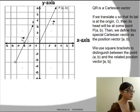Suppose the vector is u. We can translate this vector so that its tail is at the origin (0,0). Its head will be at some point P(a,b). Then we define this special Cartesian vector as the position vector [a,b]. We use square brackets to distinguish between the point (a,b) and the related position vector [a,b].